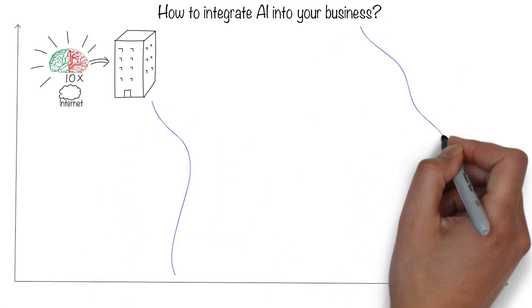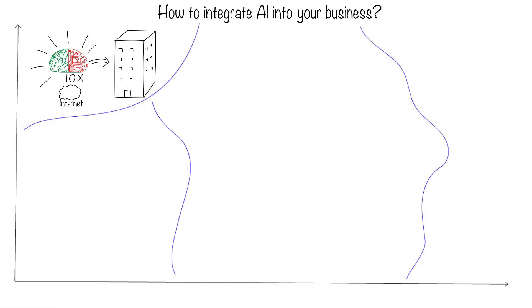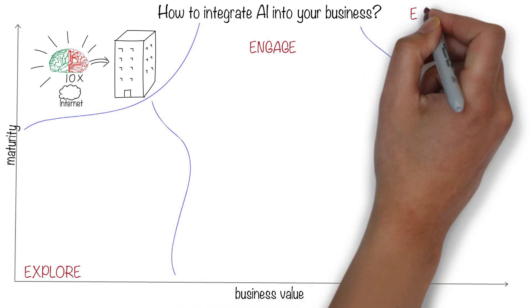How do you bring AI into your business depends on the stage you're in. You want to gradually increase your maturity with increasing business value. The three stages are explore, engage, and enable.